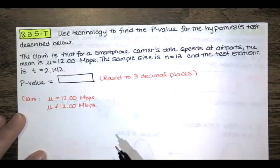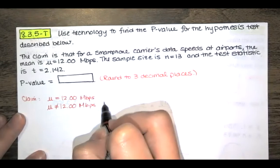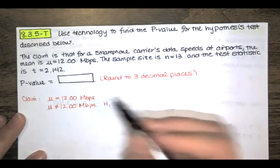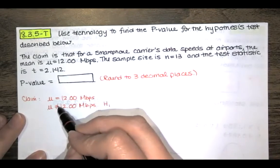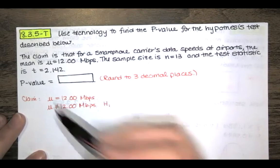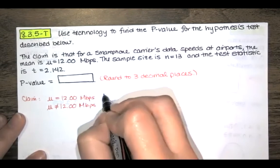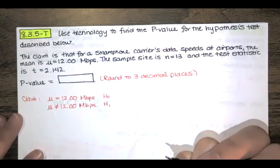The one that does not contain the condition of equality is the alternative hypothesis and in this case if I change that not equal to sign to an equal sign I get the claim. So the claim happens to be the null hypothesis.